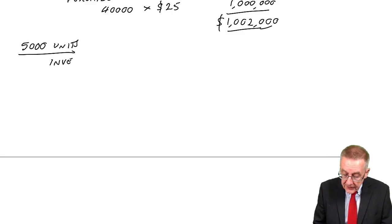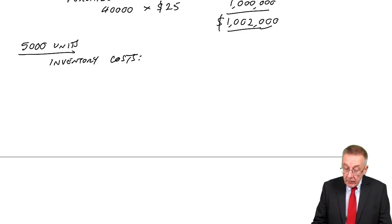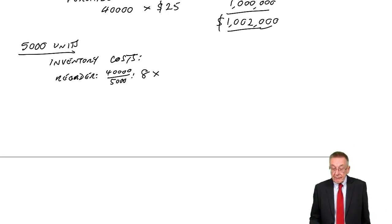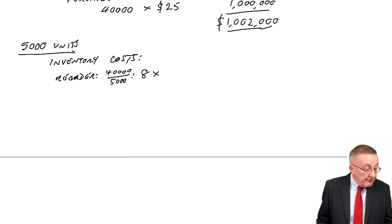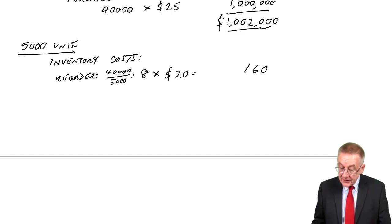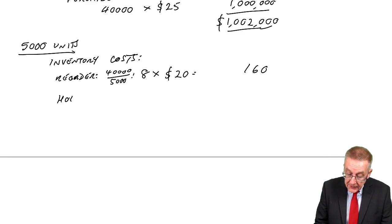So normal costing, but just watch one little thing as I go through. First of all, the inventory costs. We've done this enough times, so it should be getting pretty automatic. The reorder cost: 40,000 units a year. If we order 5,000 each time, we'll need eight orders. And the cost of placing each order was $20, so a total of 160.